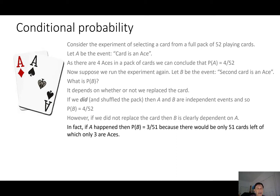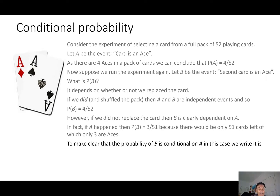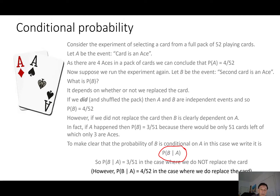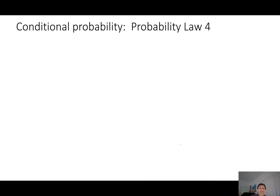But if we didn't replace the card, then B is clearly dependent on event A. If A happened — if we did select an ace first — then the probability of B must be 3 over 51, because there are only 51 cards left, of which only 3 are aces. To make clear that the probability of B is conditional on A, we write P(B|A), where the bar means B is conditioned on A. So P(B|A) = 3 over 51 when we don't replace the card.